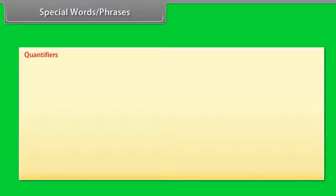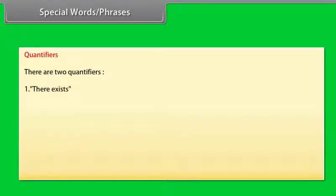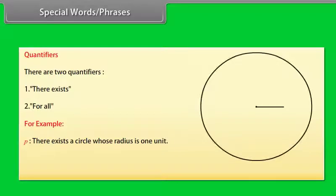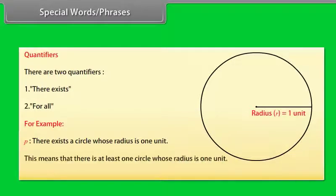Quantifiers: there are two quantifiers — (1) there exists, (2) for all. For example, P: there exists a circle whose radius is one unit, meaning there is at least one circle whose radius is one unit.